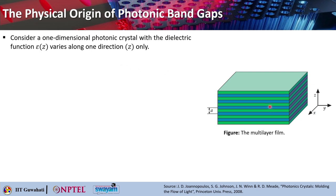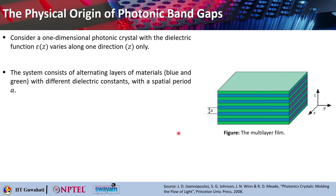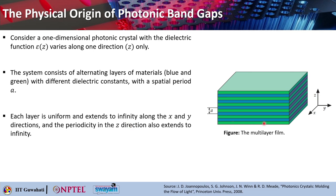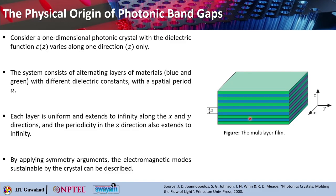We will begin our discussion with this multi-layer thin film that we have seen in the previous lecture. We considered this one-dimensional photonic crystal with dielectric function epsilon(z) that varies only along the z direction — along x and y it remains the same. This green and blue alternating regions are basically showing you the different permittivity regions or different materials which are periodically repeated, and the period here is a. Each layer is uniform and extends to infinity along both x and y directions, and the periodicity along z direction also extends to infinity. This is what is a 1D photonic crystal.